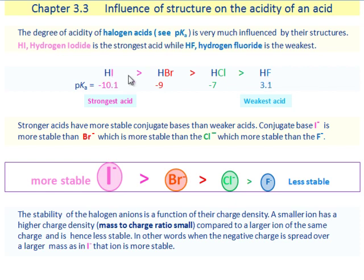Hydrogen iodide is more acidic than hydrogen bromide which is more acidic than hydrogen chloride which is more acidic than hydrogen fluoride.